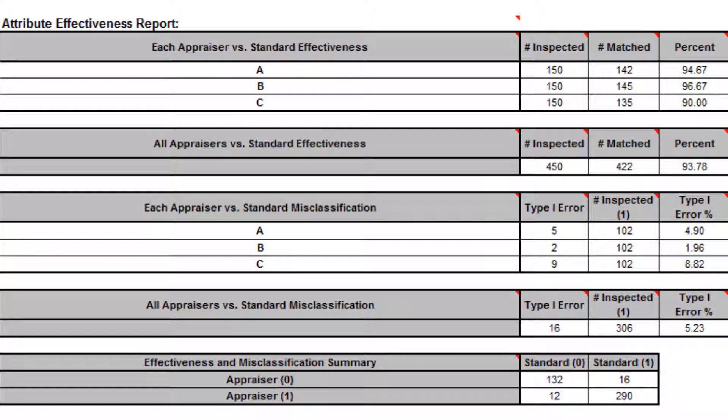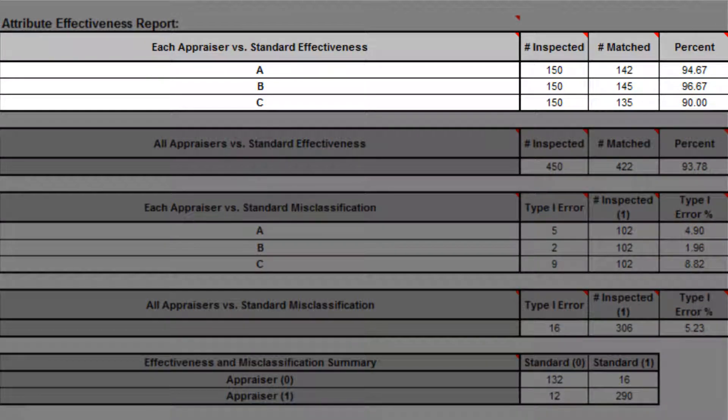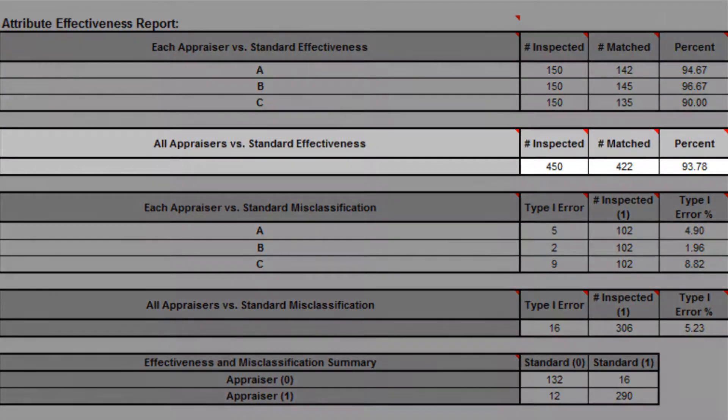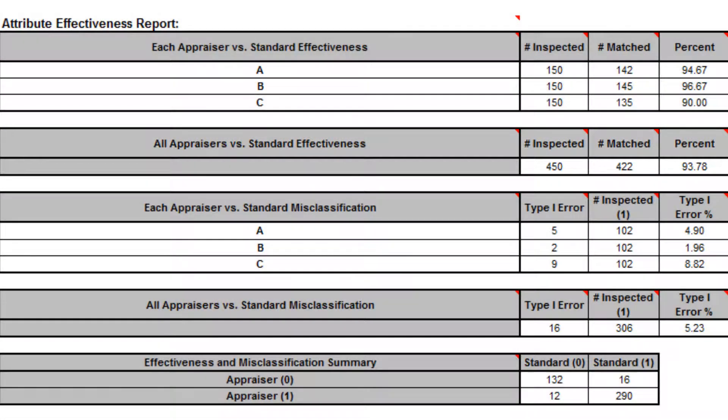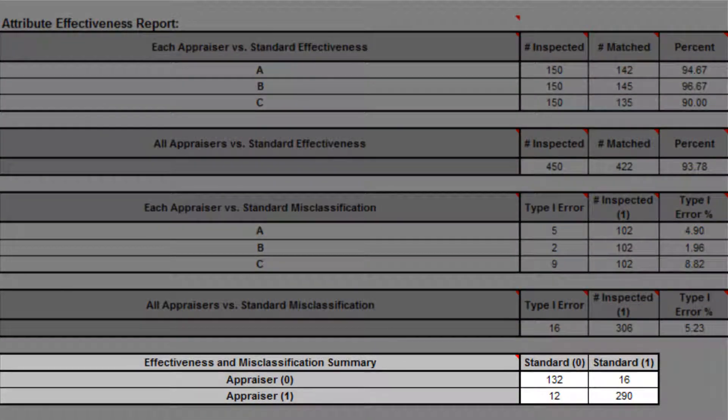The misclassification report shows all errors classified as type 1 or type 2. Mixed errors are not relevant here. The report requires a known reference standard and includes each appraiser versus standard effectiveness, all appraisers versus standard effectiveness, and effectiveness and misclassification summary.